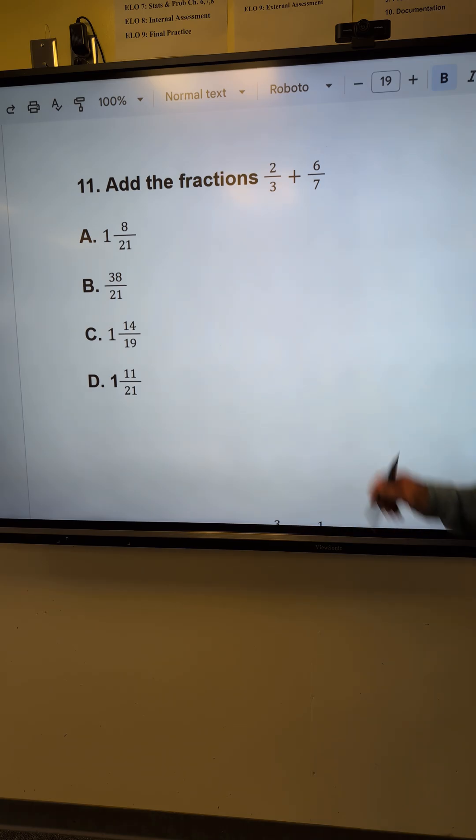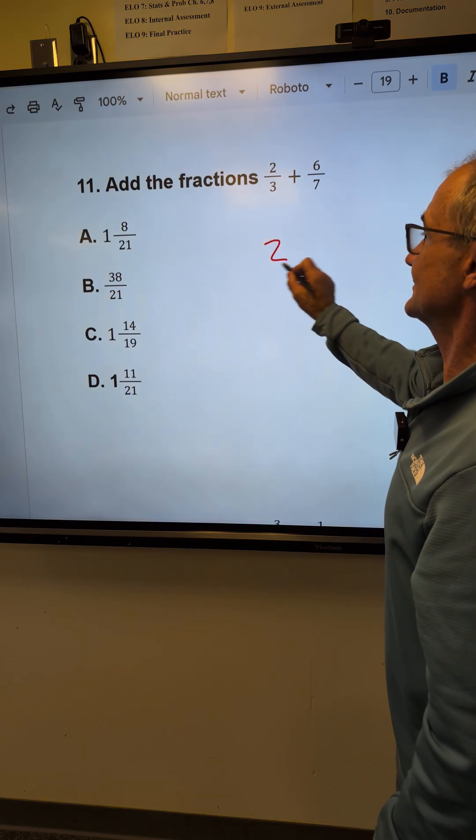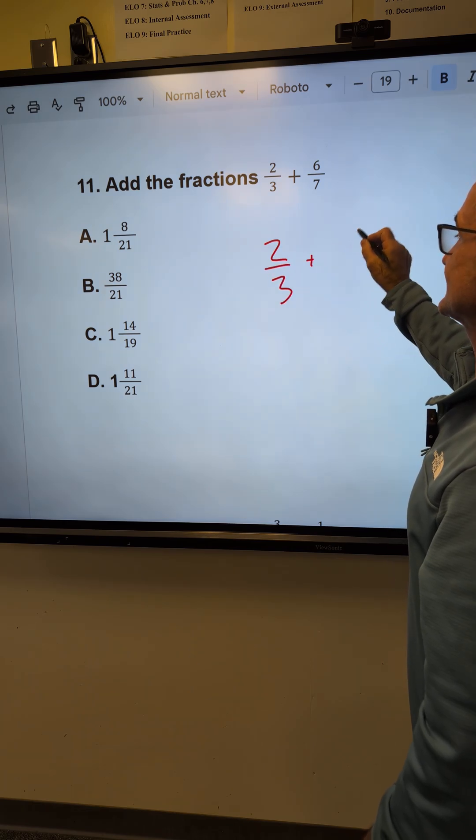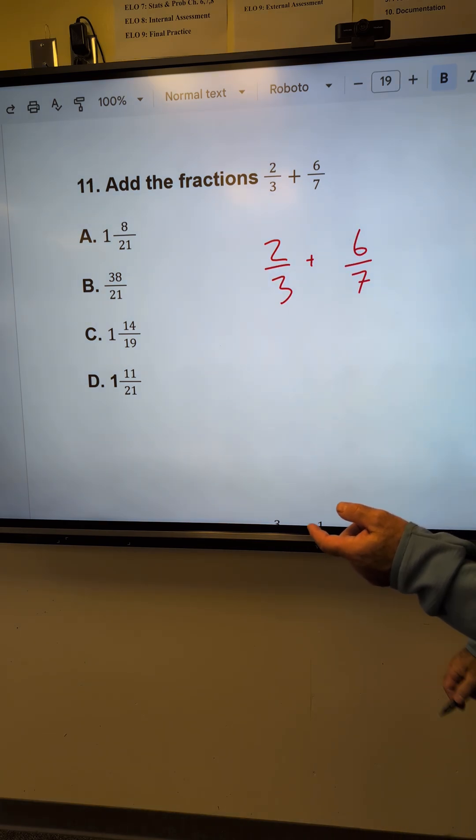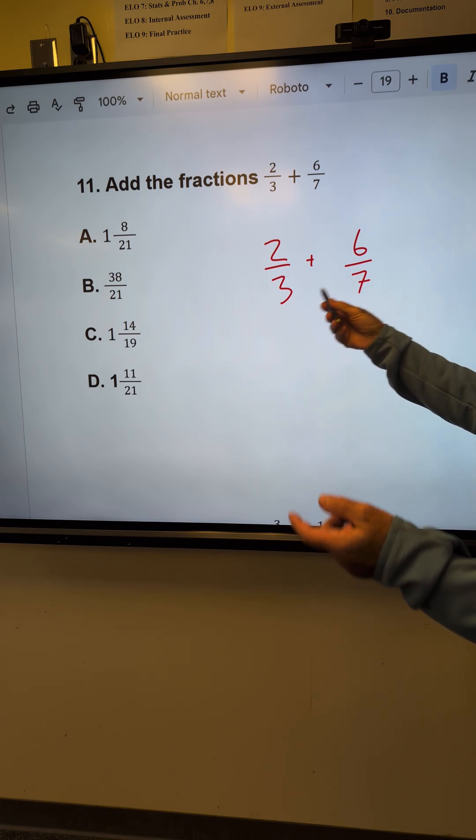To add fractions, you need a common denominator. I have that two-thirds, and I have six-sevenths. To find that lowest common denominator, I'm looking for a number that three will go into and seven.